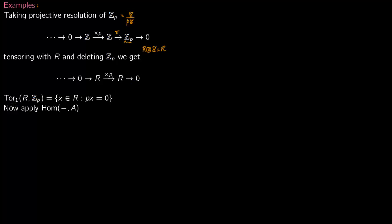So Tor_1(R, Zp) is nothing but {x ∈ R such that Px = 0}. So that is a kernel of the map, kernel over image.